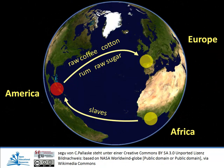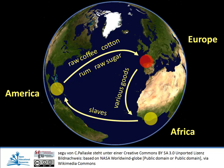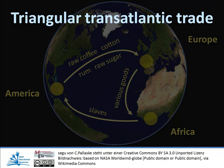In America, the slaves were used as workers on sugar plantations, on coffee, cotton, and tobacco farms, and in mines. The slaves were exchanged for raw sugar, rum, and cotton. These goods were put on ships and taken back to Europe, where they were sold. From Europe, the ships went to the West African coast. They brought various goods, including weapons, gunpowder, cloth, alcohol, and horses. These goods were exchanged for slaves. The triangular transatlantic trade was from the 17th century one of the most important parts of the world economy for more than 100 years.